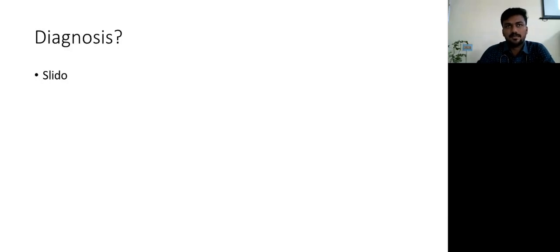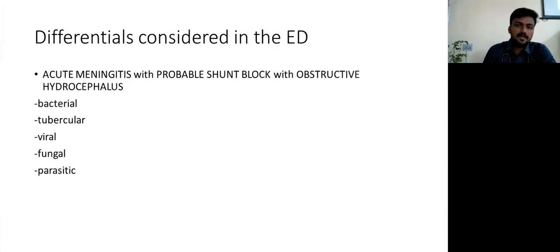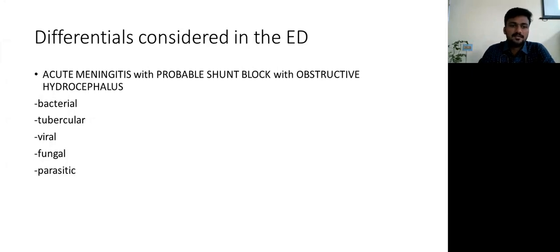The diagnosis: patient presenting with fever, headache, and vomiting with examination showing classical terminal neck stiffness — a straightforward diagnosis of acute meningitis was considered. The differentials considered in the ED were acute meningitis with probable shunt block, given her prior VP shunt for obstructive hydrocephalus and persistent unrelieved headache. The most likely etiology considered was bacterial given the short duration, followed by tubercular, viral, fungal, and parasitic.